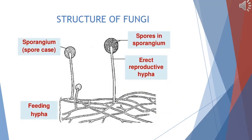In multicellular fungi, the body is made up of thread-like structures called hyphae. Feeding hyphae enter the body of a living organism and secrete enzymes such as proteases, which digest proteins into amino acids; amylase, which digests starch to maltose; maltase, which digests maltose to glucose; and lipases, which digest fats into fatty acids and glycerol. In this way they aid in decomposition while absorbing only a small amount of food energy. There are also erect reproductive hyphae with a sporangium at the top, inside which spores are produced. When these spores fall in a suitable environment, they grow into new fungi.